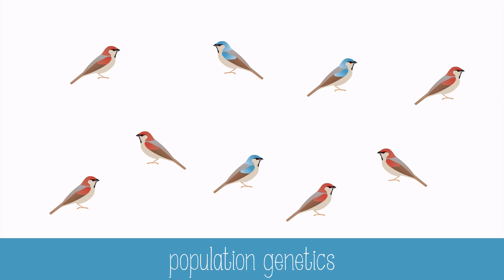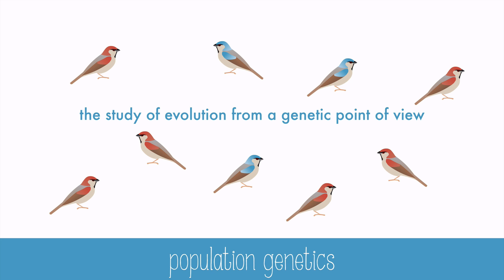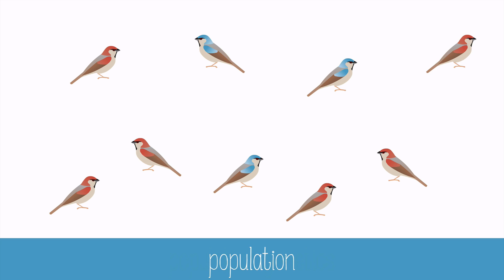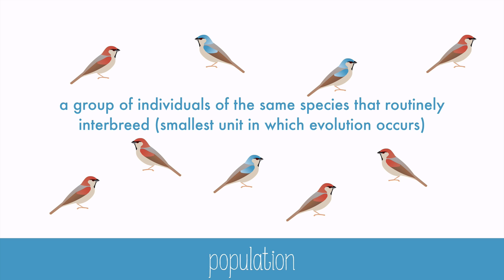Population genetics is the study of evolution from a genetic point of view. When evolution in a population occurs at the genetic level, it's sometimes called microevolution. It's a change in the collective genetic material of a population. Populations are the smallest unit in which evolution will occur.